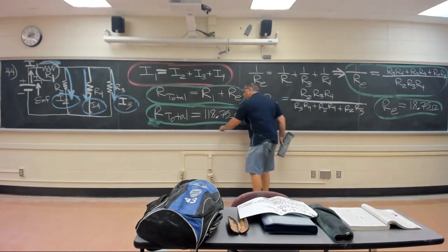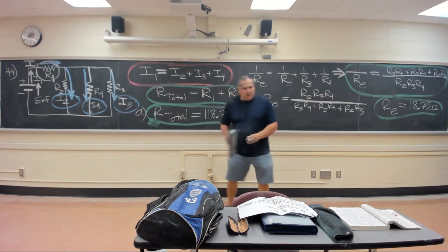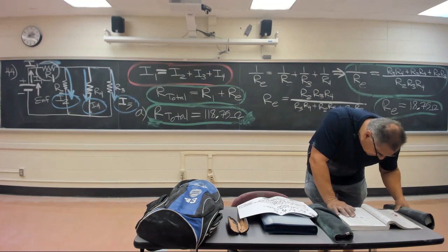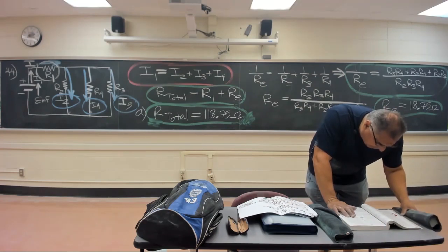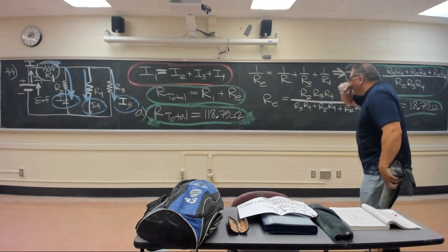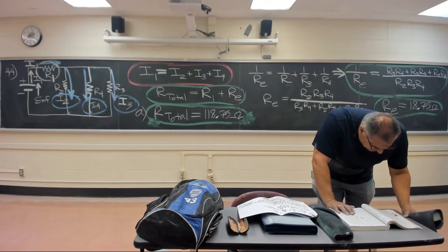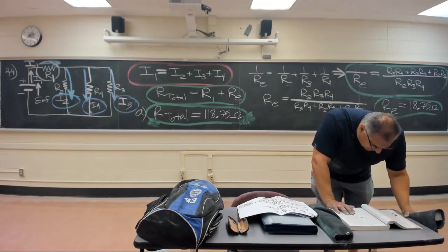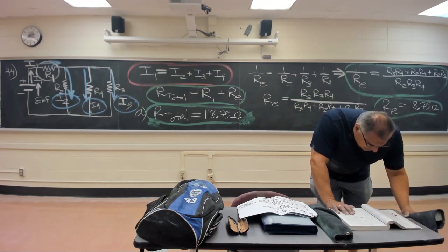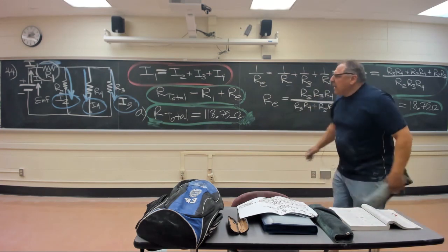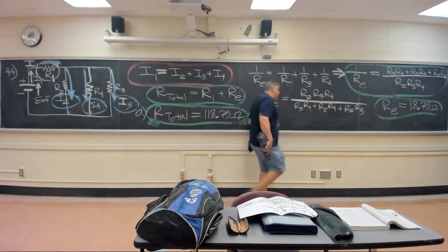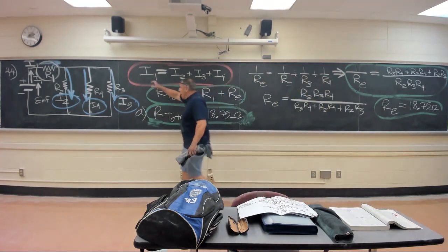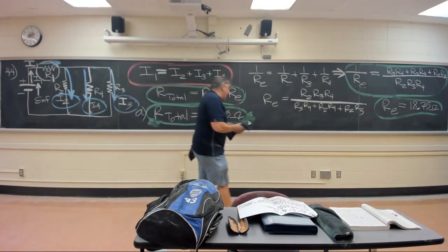For part A, the equivalent resistance - the total resistance in this problem - is 118.75 ohms. Now they're asking for the currents in parts B through E: current through resistor 1, resistor 2, resistor 3, and resistor 4. We know the EMF, so let's find the grand total current.